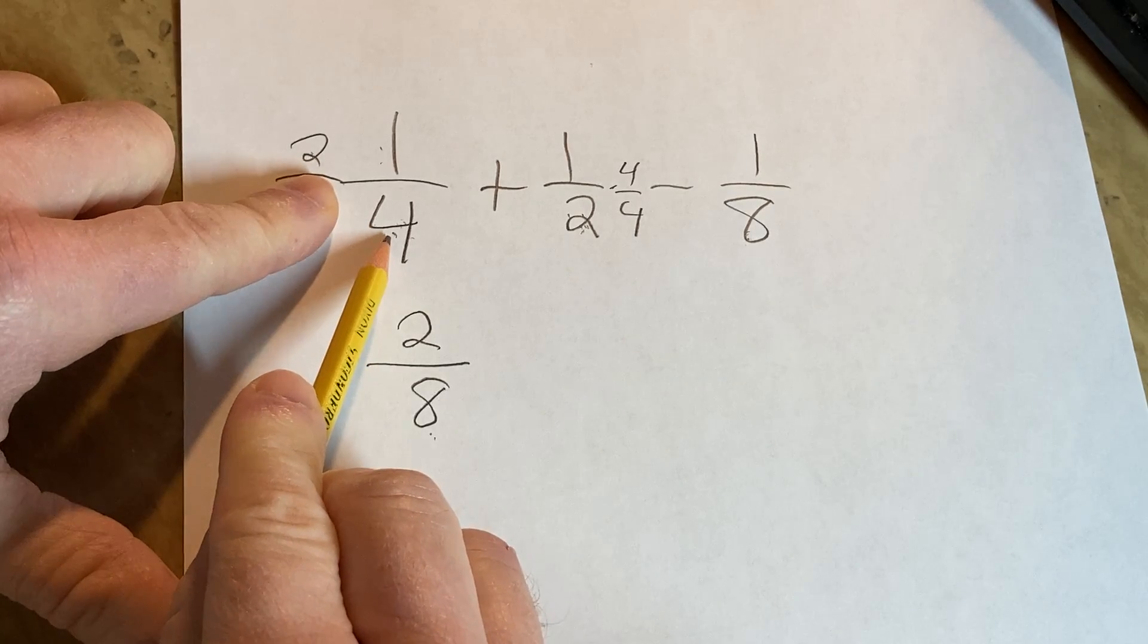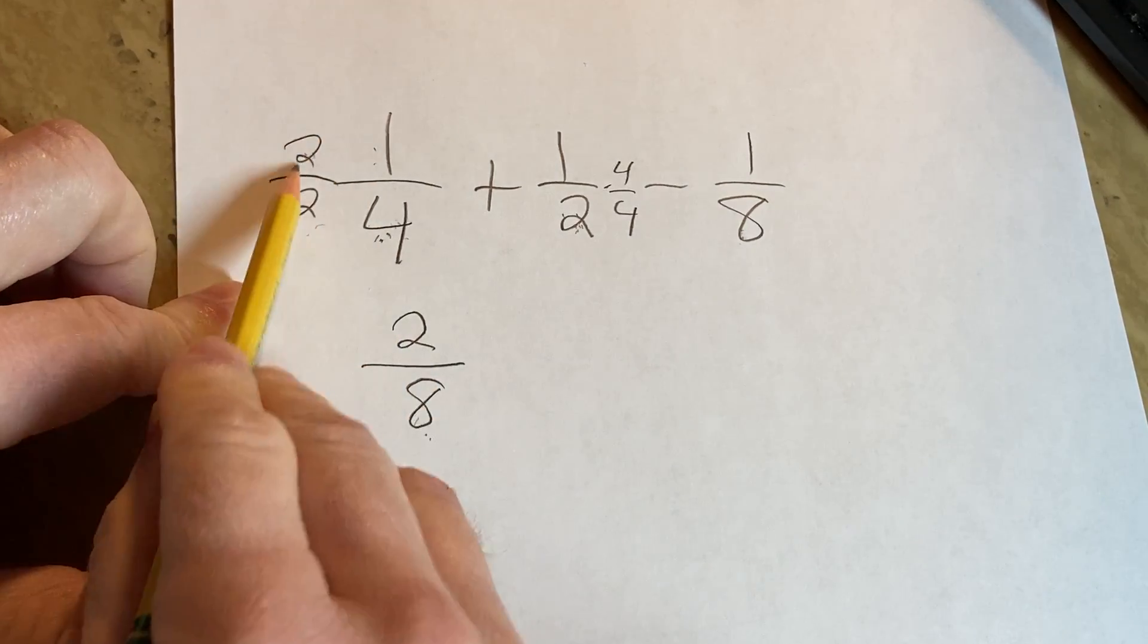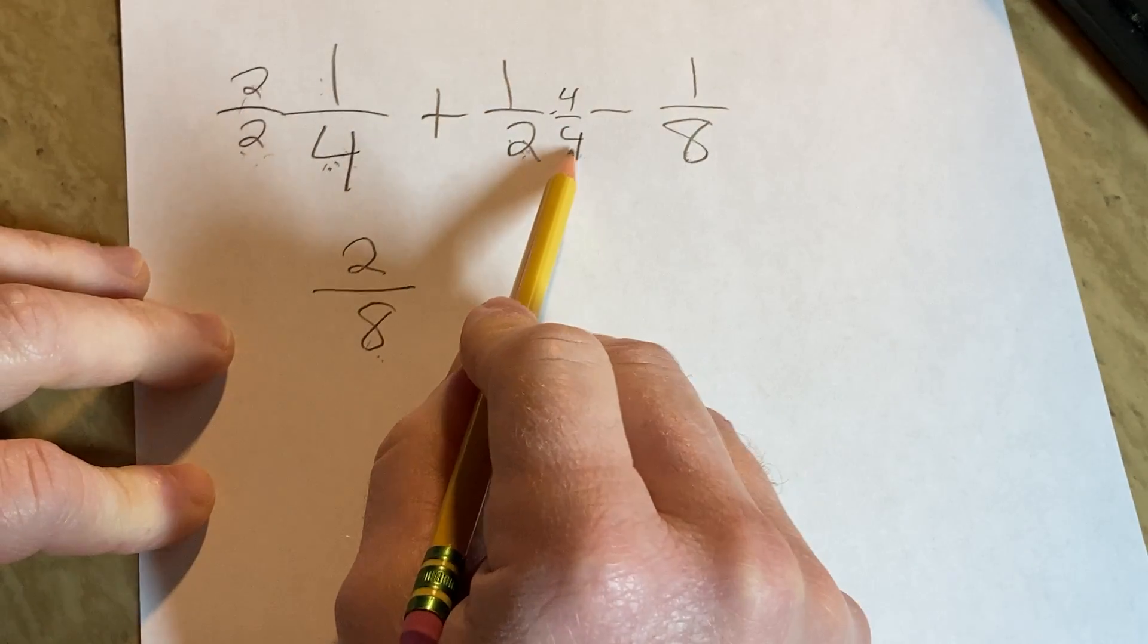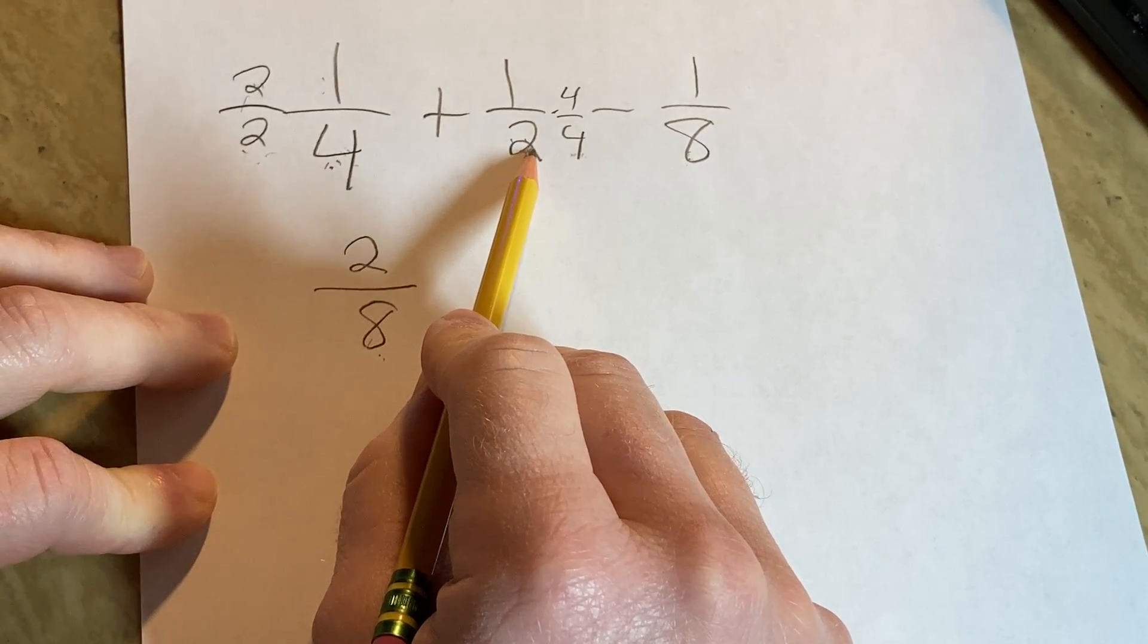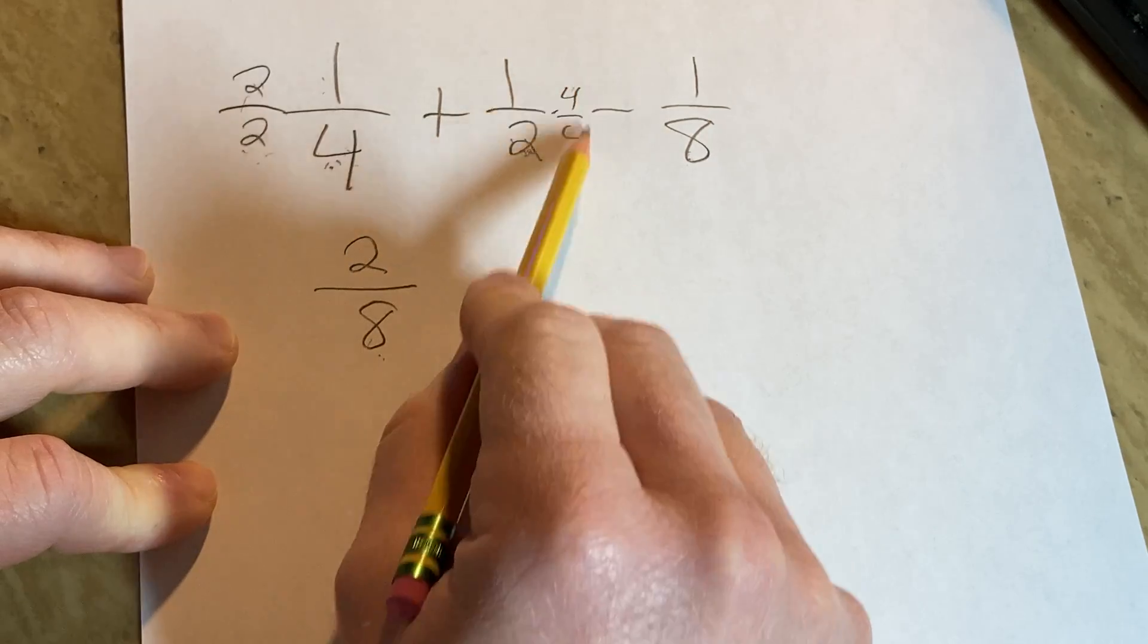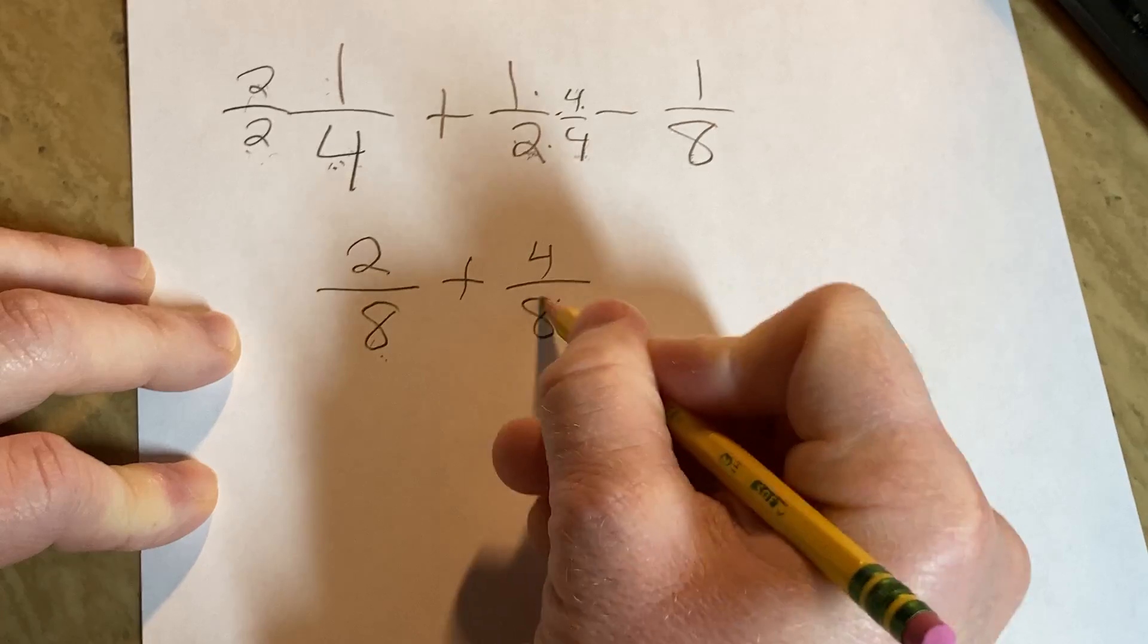We say, hey, what's missing? What do we need to get 8? Well, we need a 2 because 2 times 4 is 8. So you multiply by 2 over 2. Same thing here. You say, hey, what's missing? I have a 2 here. What do I need to get an 8? I'm missing a 4. So you multiply by 4 over 4. 4 times 1 is 4. 4 times 2 is 8.